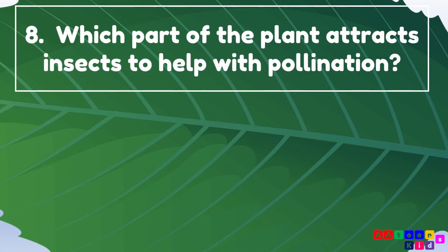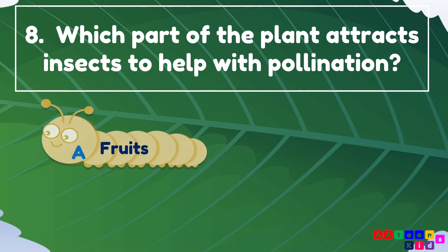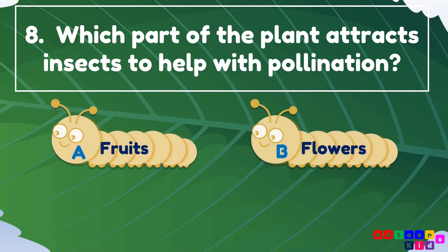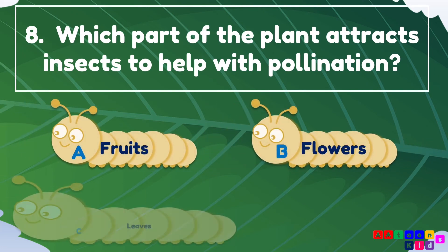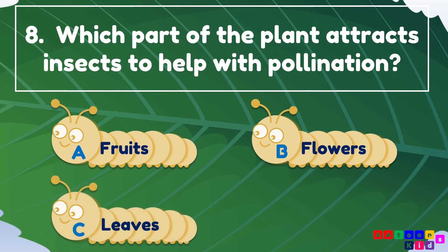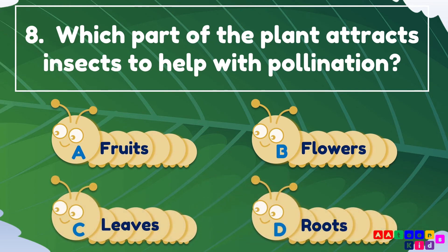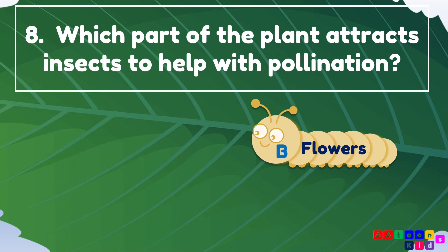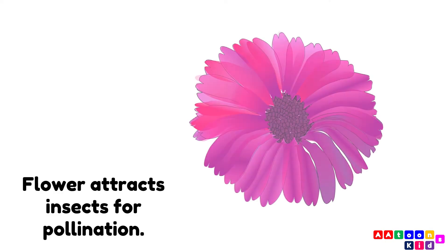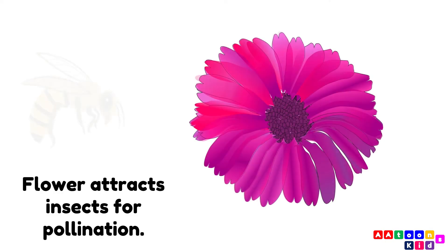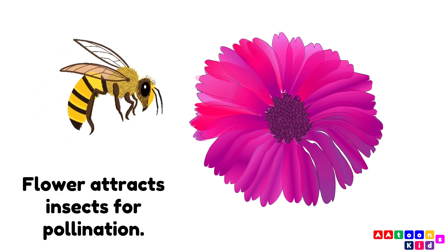Which part of the plant attracts insects to help with pollination? Fruits, flowers, leaves, or roots? The answer is flowers. Flowers attract insects for pollination.